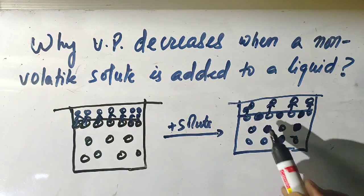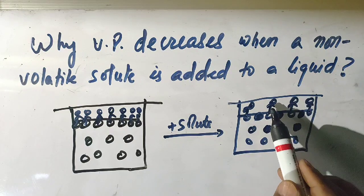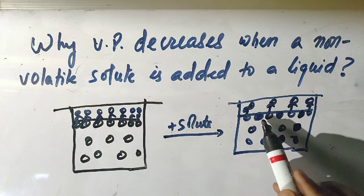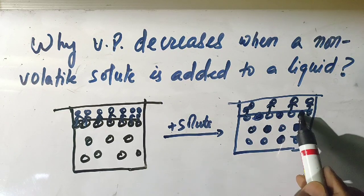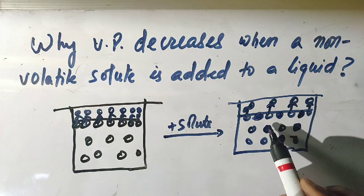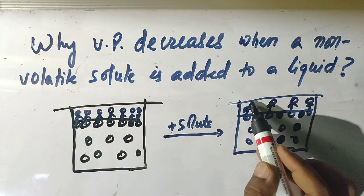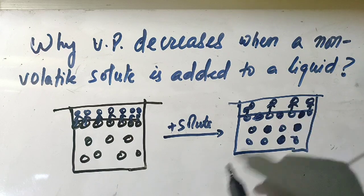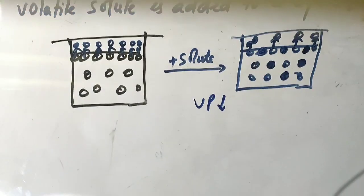It is obvious from this explanation that when a non-volatile solute is added to a volatile liquid, the vapor pressure will decrease, because some of the surface area of the liquid is occupied by the non-volatile molecules which are not converted into vapor phase. So less vapor is created, because of which vapor pressure decreases.